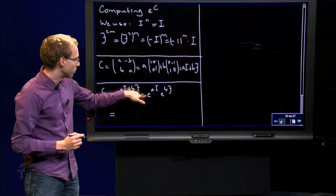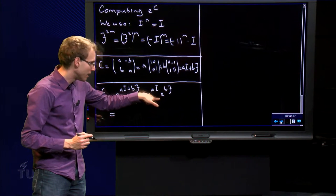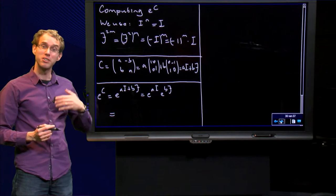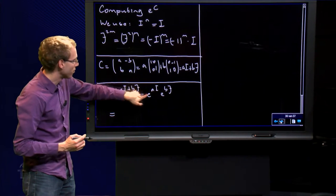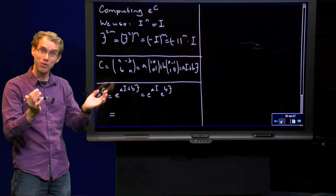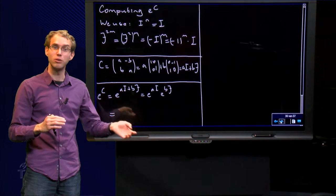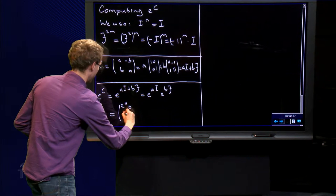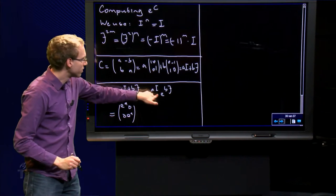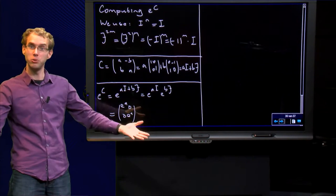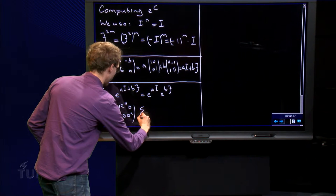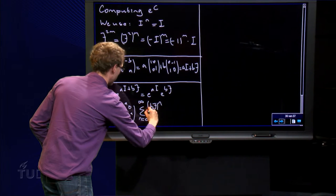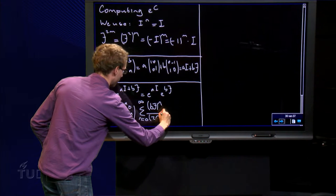We compute e to the power c by splitting it into e to the power a times i, times e to the power b times j. We know how to compute the first part because i is the diagonal matrix, so e to the power diagonal matrix yields e to the power a, 0, 0, e to the power a. For the second term we use our series definition: the sum from n equals zero to infinity of b times j to the power n over n factorial.